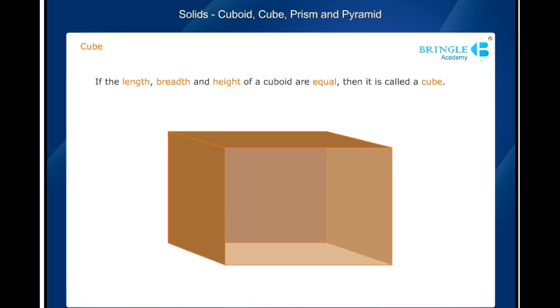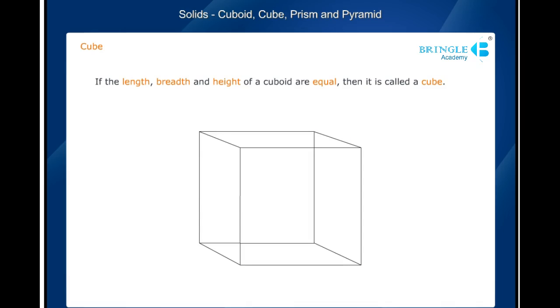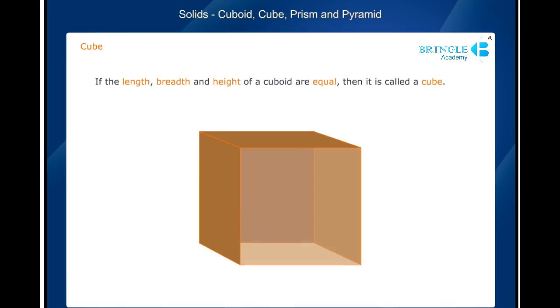Cube. If the length, breadth, and height of a cuboid are equal, then it is called a cube. The figure shown on the screen represents a cube. In a cube, all the 12 edges are equal and all the six faces are squares.